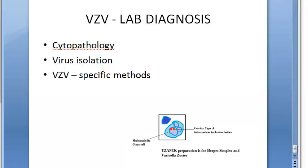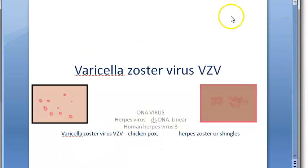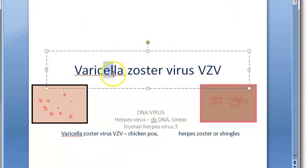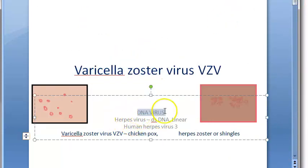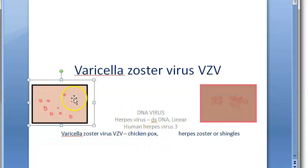Hello, in this video we want to look at the lab diagnosis of varicella zoster virus. In the last videos we have already looked at what varicella zoster virus is — it is a herpes virus, it's a DNA virus, it's double-stranded DNA which is linear. Basically it's human herpes virus 3, and it causes chickenpox.